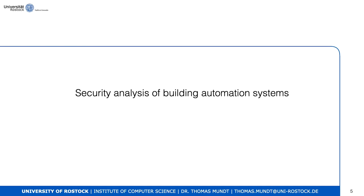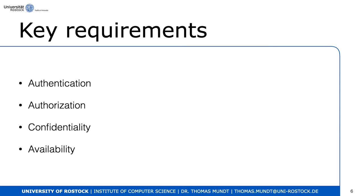We start with the security analysis of building automation systems, concluding our session about KNX. Key requirements for security are: authentication — the other party is what it claims to be. In a network it's not easy to prove authenticity; you can provide a password or shared secret, but if done in plain text an attacker might eavesdrop and reuse it. Authorization is another key requirement, meaning you grant access to certain resources — entering a building, opening a door, or printing on a printer.